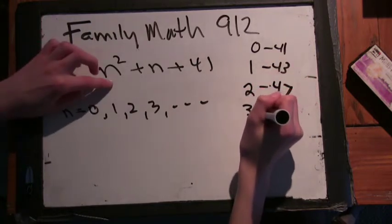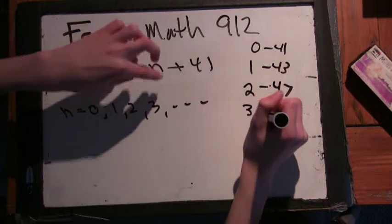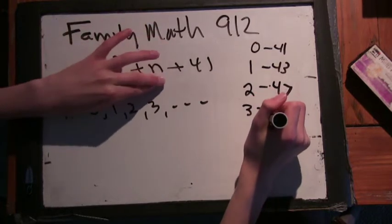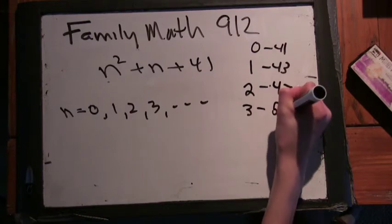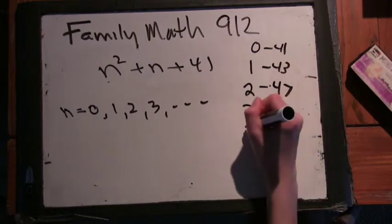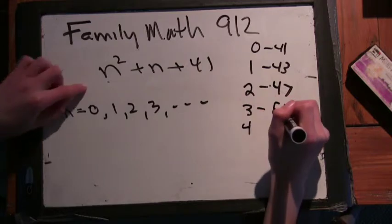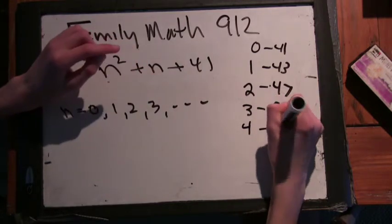3, 9 plus 3 is 12, and then that would be 53, which I believe is prime. Okay. Just to do one more, 4, 16, 20, so it would be 61.